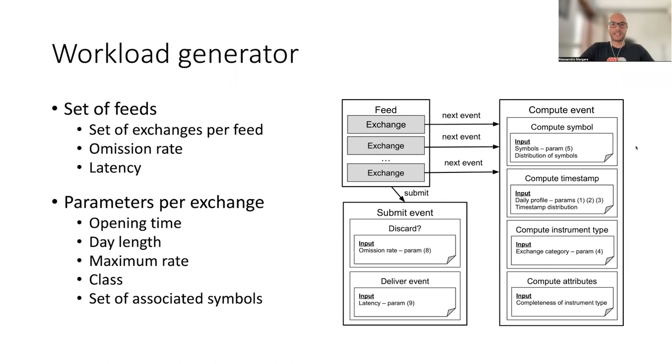So on the left you have the parameters that you can select. On the right you have an overview of the algorithm used in the workload generator. You don't have to read the details but the basic idea is that we have a set of feeds and each feed has a set of associated exchanges sources. For each exchange we generate events using a compute event procedure that determines the content of the event and then there is a submit event procedure that computes the delays and omission in event delivery.